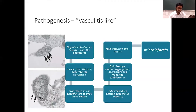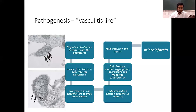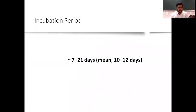The pathogenesis is vasculitis-like: the organism divides and breeds within phagocytes. When it escapes from the cell back into circulation, it proliferates on the endothelium of small blood vessels, releasing cytokines that damage endothelial integrity, causing fluid leakage, platelet aggregation, polymorphs and monocyte proliferation — leading to focal occlusive vasculitis and micro-infarcts. The usual incubation period for scrub typhus is seven to twenty-one days, with a mean of ten to twelve days.